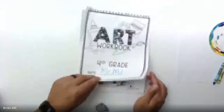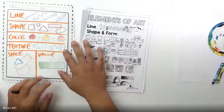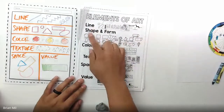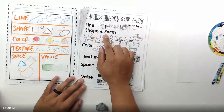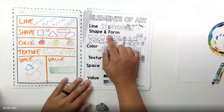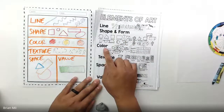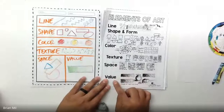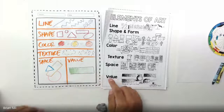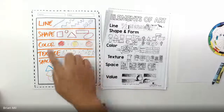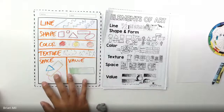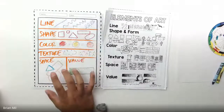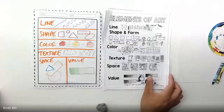What we talked about were the elements of art: line, shape, form, color, texture, space, and value. We went over all of those, and on the blank sheet we went over every single one of them with different examples.